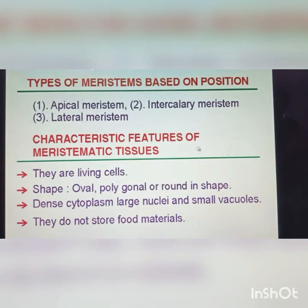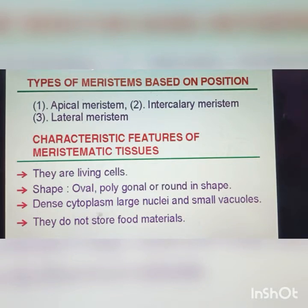Characteristic features of meristematic tissues: they are living cells. Shape is oval, polygonal, or round. They have dense cytoplasm, large nuclei, and small vacuoles. They do not store food material.